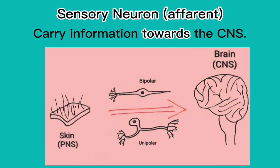Sensory neurons conduct impulses or signals from the peripheral sensory body parts such as skin, eyes, etc. The impulses then travel along the axon and the brain will receive the signal.